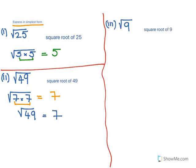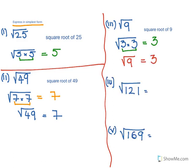Next is square root of 9. We know 9 is 3 into 3, so we have two 3s — that equals 3. So square root of 9 equals 3. Now let's find square root of 121. We know 121 is 11 into 11, so we have two 11s, therefore square root of 121 equals 11.